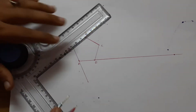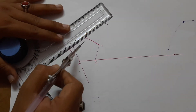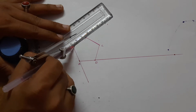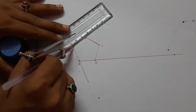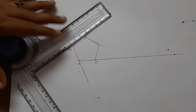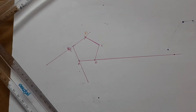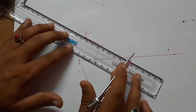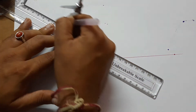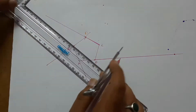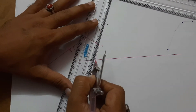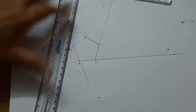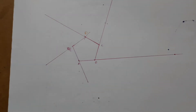Next, D and E are parallel. C and D are parallel. B and C are parallel. A and B are parallel. Next, we will draw a line.